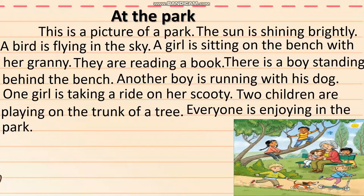Our picture composition is ready. Let us read the composition now. At the Park. This is a picture of a park. The sun is shining brightly. A bird is flying in the sky. A girl is sitting on the bench with her granny. They are reading a book. There is a boy standing behind the bench. Another boy is running with his dog. One girl is taking a ride on her scooty. Two children are playing on the trunk of a tree. Everyone is enjoying in the park.